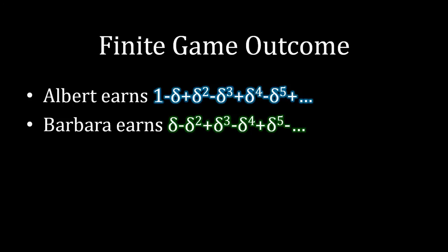What would be nice is to figure out what happens as this becomes closer and closer to infinitely many periods — as you extend the finite game to longer and longer numbers of periods. And in fact we can. This is a bit of a mathematical trick, but the series of numbers you see for both Albert's payoff and Barbara's payoff has a fancy mathematical term: we call it a geometric series.